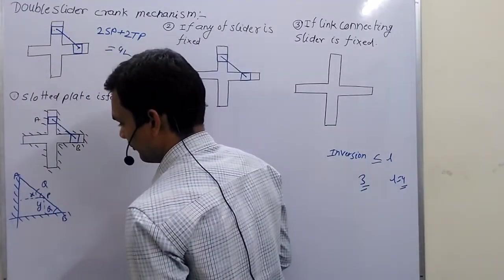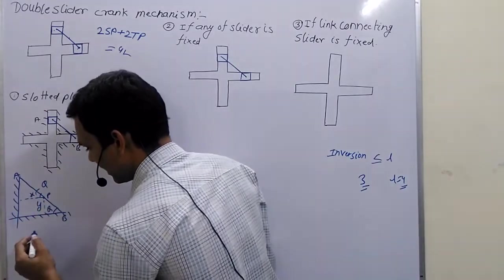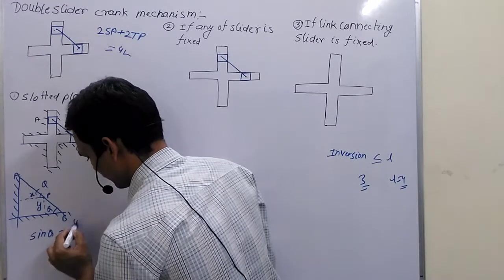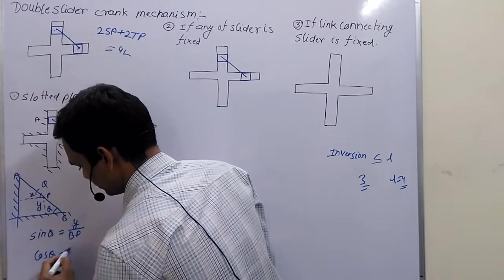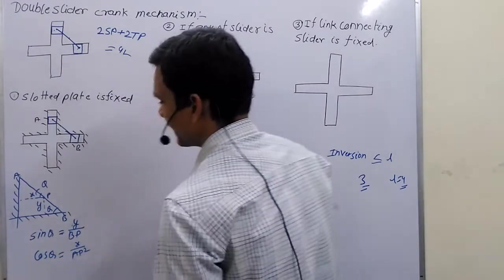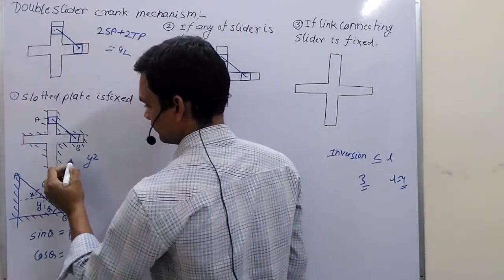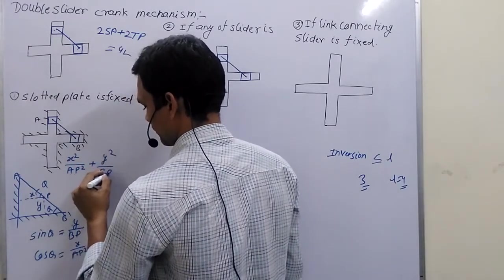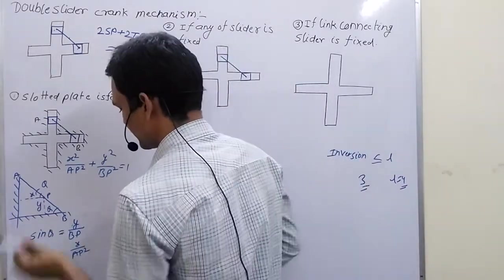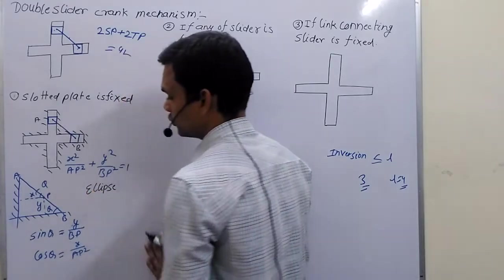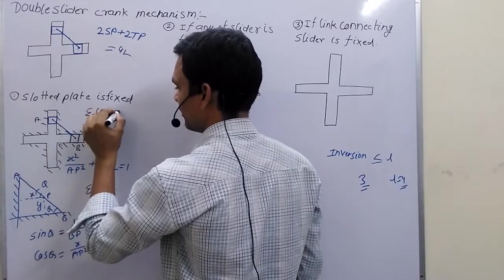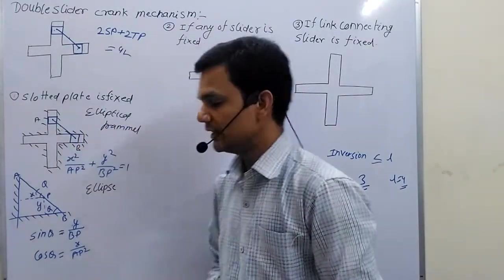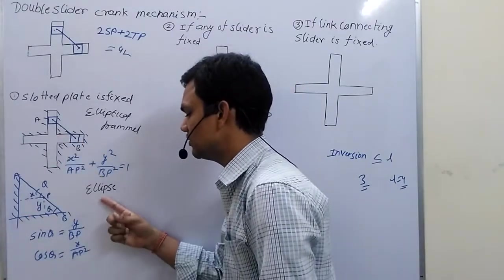Now, if I want to derive the equation, I calculate: sin theta equals Y upon VP and cos theta equals X upon VP. From this you can see this is the equation of an ellipse. So if we fix the slotted plate, we get an ellipse. You can draw thousands of ellipses by this mechanism, and this is used to draw ellipses.